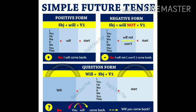Now we will see the structure of simple future tense — positive form, negative form, and question form. In the positive form, the structure is: Subject + will + V1. The subjects are: I, you, he, she, it, we, and they. After all these subjects, we use will + V1. This is the positive form.